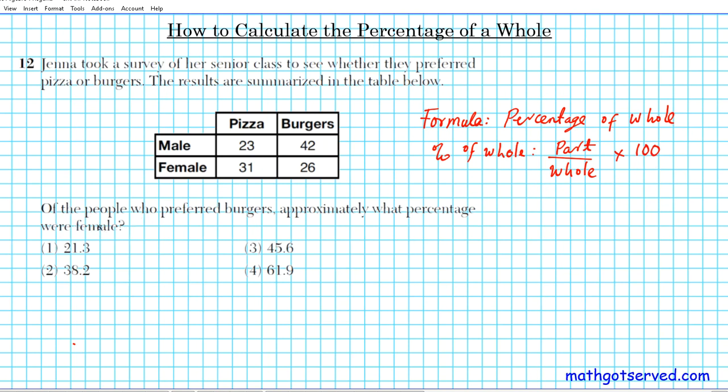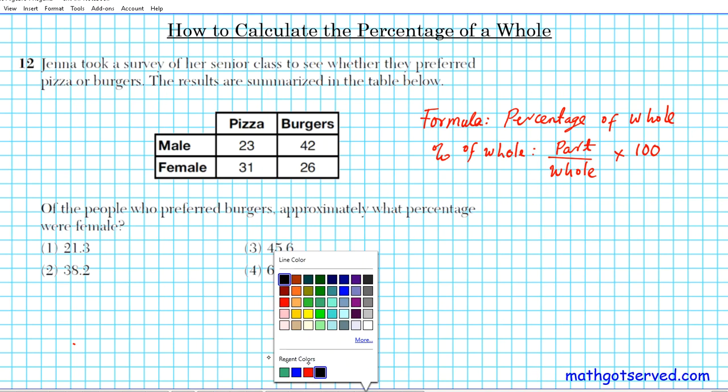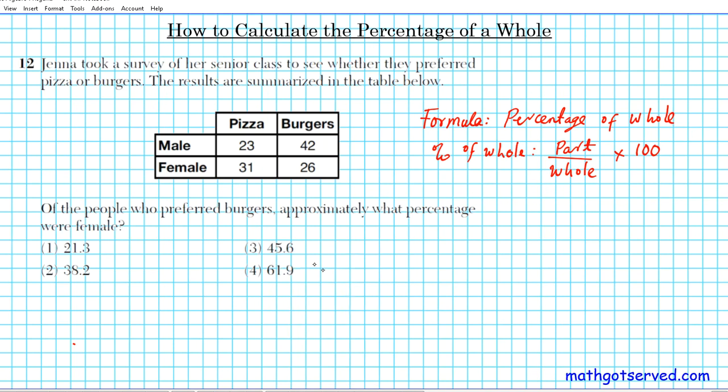So what's the situation here? What's the whole and what's the part? Let's go ahead and identify what those components are so we can solve the problem. We're looking for the percentage of females who preferred burgers. If you look at burgers as a whole, those who preferred burgers are composed of two genders - it's either male or female. So the whole is basically the total number of people that preferred burgers.